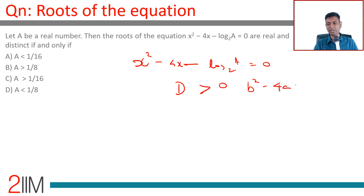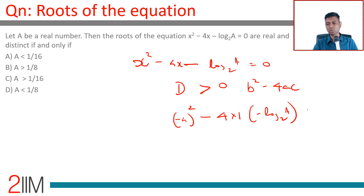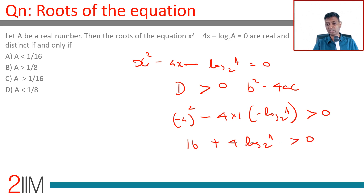The discriminant is b squared minus 4ac, which gives minus 4 the whole square minus 4 times 1 times minus log a to the base 2, greater than 0. This simplifies to 16 plus 4 times log a to the base 2 is greater than 0.